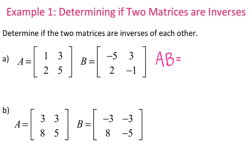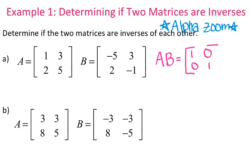Multiplying the matrices, you can go ahead and do that on the calculator — hit alpha zoom. Both of those are 2 by 2, so adjust the settings accordingly. I'm going to hit alpha zoom, it's a 2 by 2, and start typing in my numbers: negative 5, 3, 2, negative 1. Using the calculator to find the product, it gives me 1, 0, 0, 1. I'm checking to see if the product results in the identity matrix. This is the identity matrix for a 2 by 2, so yes, they are inverses.